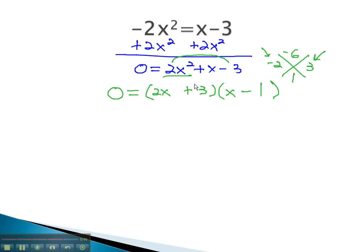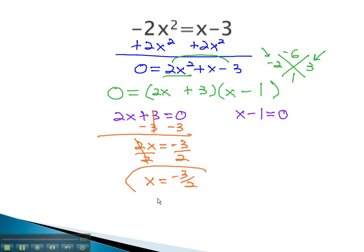Now that it's factored, we can solve by setting each factor equal to 0. 2x plus 3 equals 0, and x minus 1 equals 0. The equations solve quickly by subtracting 3, giving us 2x equals negative 3, and dividing by 2 to get our first solution, negative 3 halves. Our last solution comes from adding 1 to both sides of the other equation. This gives us x equals 1.